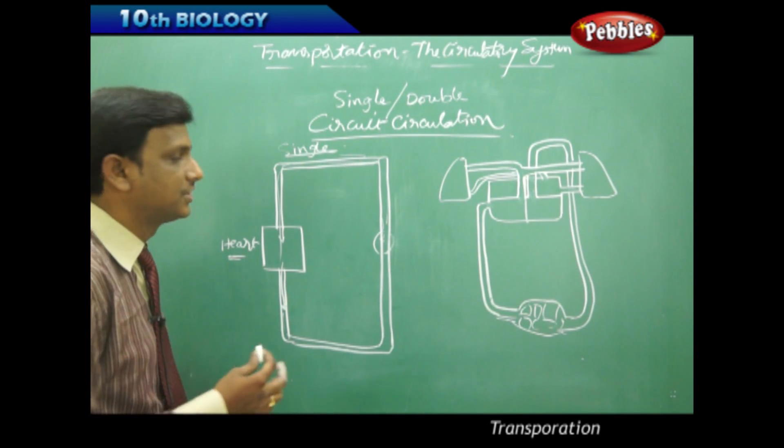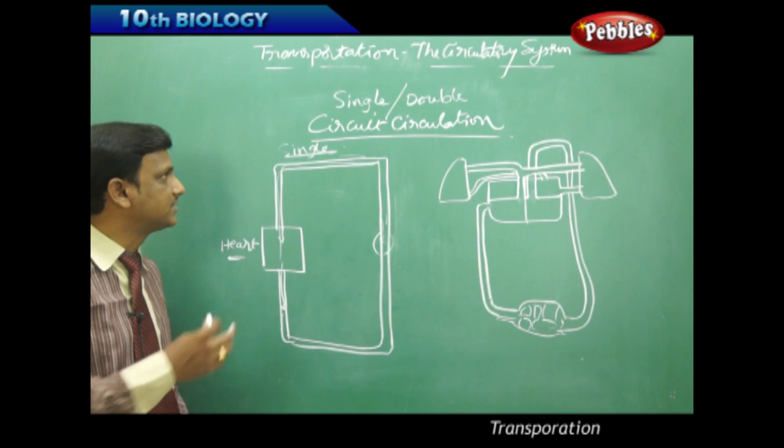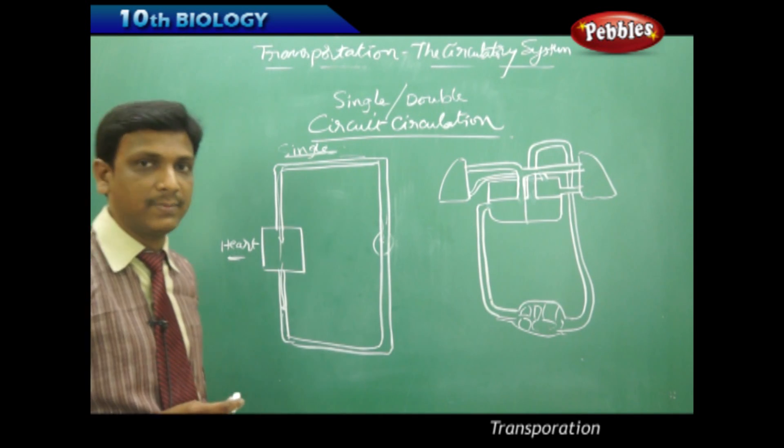Now let us look at the circulation types. There are two major types of circulation: single circuit circulation and double circuit circulation.